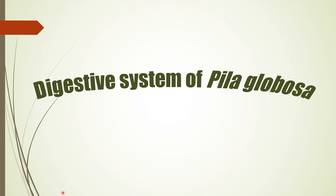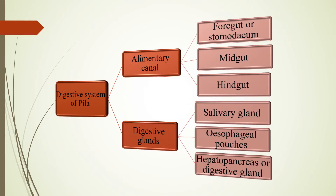I am Sonalita Ade and in this presentation I am going to discuss the digestive system of Pila globosa. The digestive system of Pila consists of a tubular alimentary canal and digestive glands. The alimentary canal is further differentiated into foregut (also called stomodium), midgut, and hindgut. There are three types of digestive glands present in Pila: salivary gland, esophageal pouches, and hepatopancreas (or digestive gland).